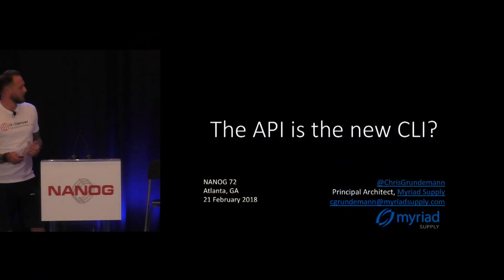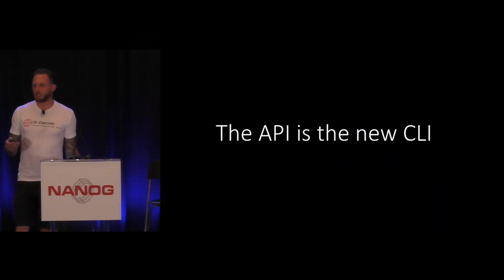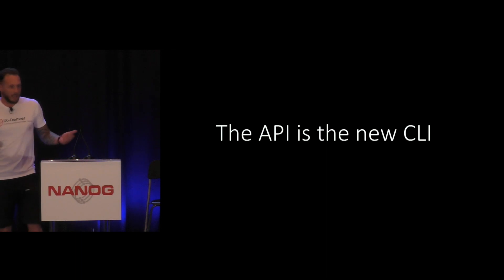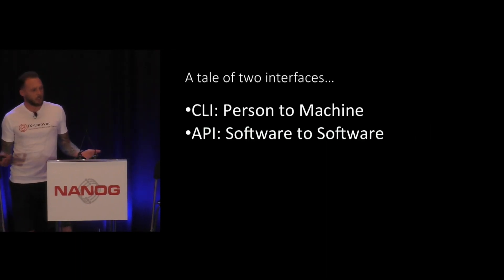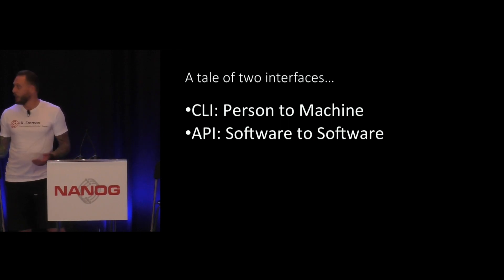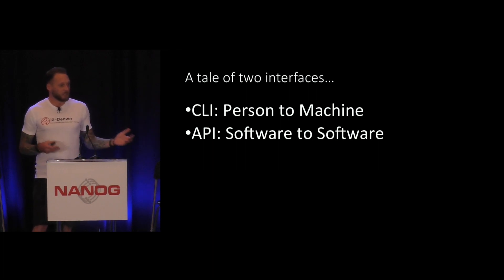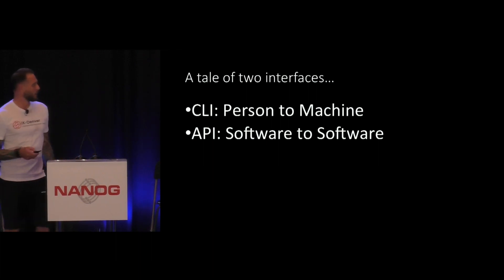The concept that the API is the new CLI — if you're paying attention to new trends in networking, you've probably heard some variation of that statement. Starting simplistically, we're really talking about two different interfaces: the command line interface, set up specifically for people to interact with machines, and the application programming interface, set up specifically for programs to talk to programs. That distinction is important as we work through this.